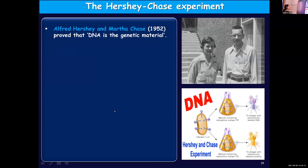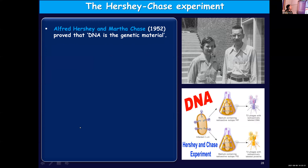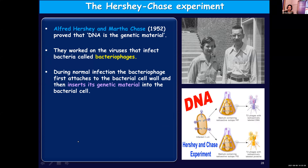Alfred Hershey and Martha Chase, in 1952, proved that DNA is a genetic material. How did they prove it? They used bacteriophages to conduct this experiment. Bacteriophages are viruses which attack bacteria or which use bacteria as their host. During normal infection, the bacteriophage will come and get attached to the cell wall of bacteria.